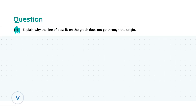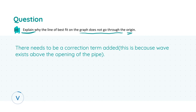Finally, part five asks why the line of best fit does not go through the origin. The reason is that a correction term needs to be added, because the wave actually extends above the opening of the pipe. This end correction — often written as 0.3D — accounts for this effect. Without including that correction, the graph does not pass through the origin. Getting this correct earns four marks.